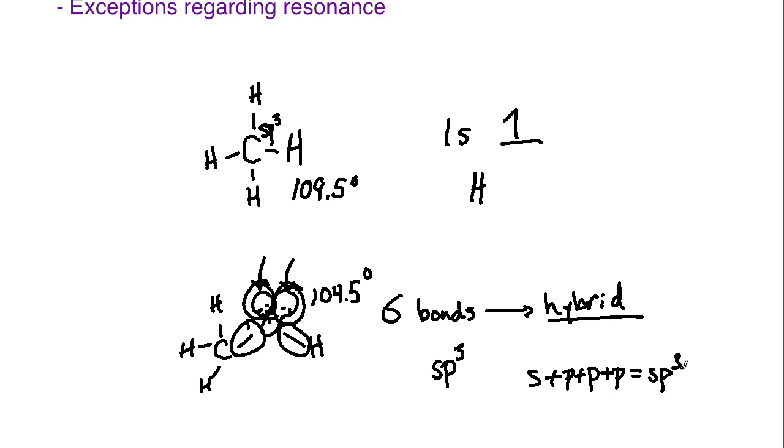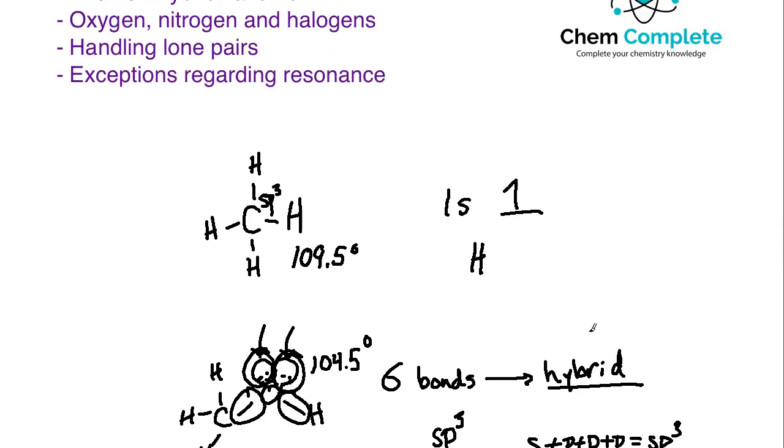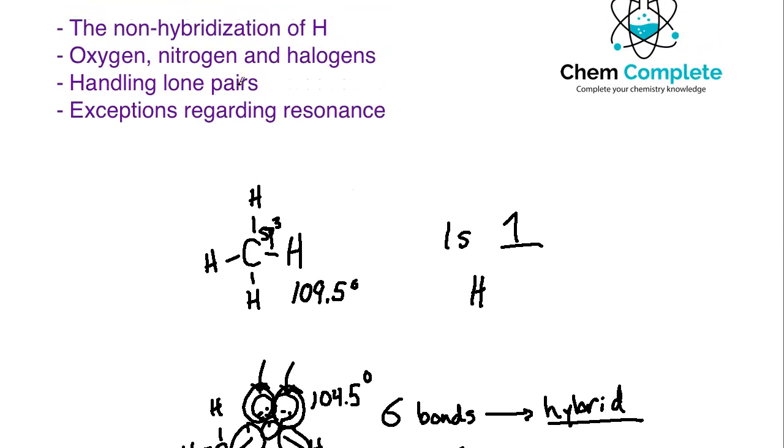Now, if this is the first video that you are watching in the series, and you aren't familiar with SP3, SP2, and SP hybridization states, I would strongly encourage you to check out the playlist that is linked in the description box and go back through the first two lectures. But if you are familiar with that, the lone pairs, generally speaking, are going to be found in hybrid orbitals. Now, that talks about handling lone pairs. There is something we need to discuss, which is resonance.